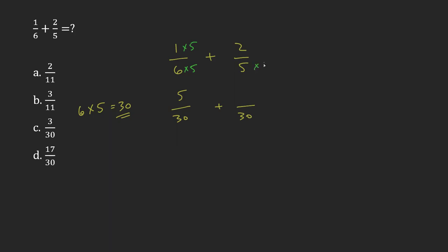Over here I multiplied by 6. 5 times 6 that gives me 30, so it's going to be 2 times 6 on the top, which gives me 12.